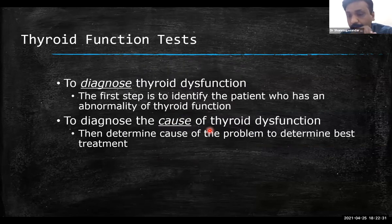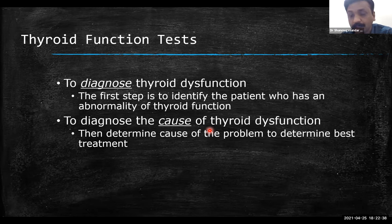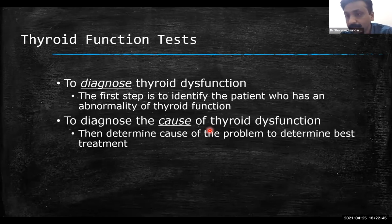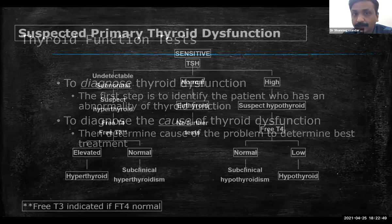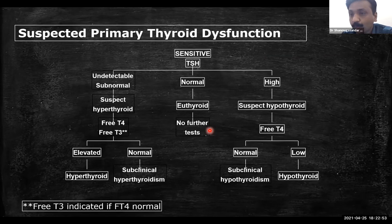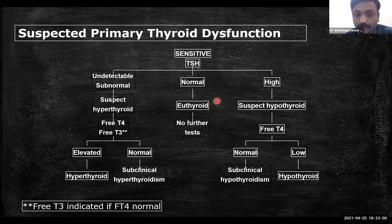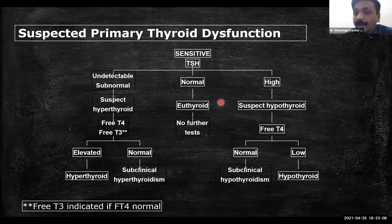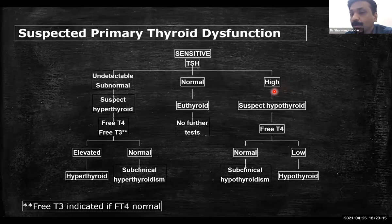What are the main thyroid function tests? For any condition, we need two things: to diagnose the condition, we do blood investigations like thyroid function tests; and once diagnosis is confirmed, we establish the cause. TSH is the primary investigation. If TSH is normal, the patient is euthyroid most of the time, except in secondary hypothyroidism where the problem is at the hypothalamus or pituitary level. If TSH is high, suspect hypothyroidism — if T4 is normal, it is subclinical hypothyroidism; if T4 is also low, it is overt hypothyroidism. If TSH is undetectable or subnormal, it is hyperthyroidism — if T3 and T4 are normal, it is subclinical hyperthyroidism; if elevated, it is overt hyperthyroidism.